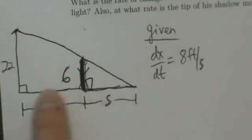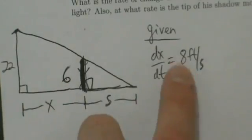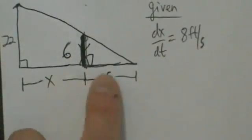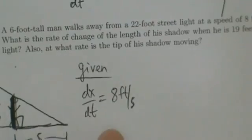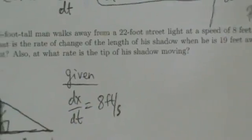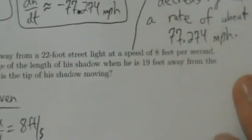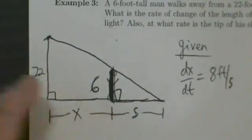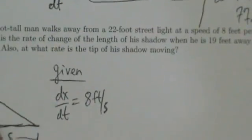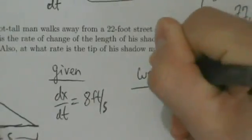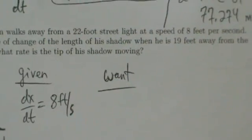As a side note, if the guy were walking towards the light, x would be getting smaller and dx/dt would be negative. But here he's walking away, so dx/dt is positive. Besides the rate, we were also given the 22-foot street light and the 6-foot man height, which are already labeled in the picture.